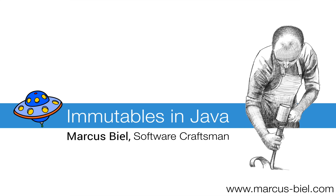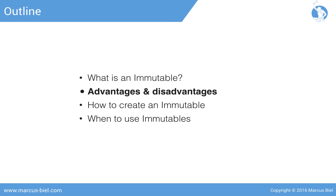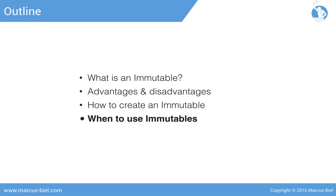Among many other cool things, Java 8 introduced the concept of functional programming as well as the new Java Time API. Immutable classes play a key role in both of these new features. In the next 15 minutes I'll tell you exactly what an immutable is, its advantages and disadvantages, how to create an immutable, and I'll finish with concrete advice on when to use immutables in your daily work.